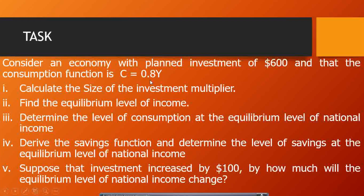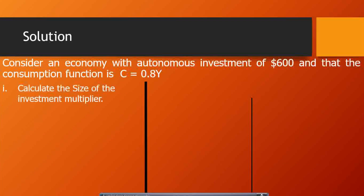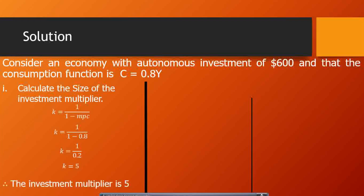The MPC is 0.8. Our formula for the investment multiplier is 1 over (1 minus MPC). Substituting: 1 divided by (1 minus 0.8) = 1 divided by 0.2 = 5. The investment multiplier is 5. This is the same multiplier as in part one because the marginal propensity to consume has remained at 0.8.